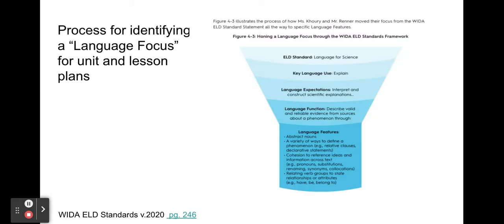Another excellent page to bookmark or refer to in the PDF is page 246. The standards framework can be looked at as a funnel that narrows down as the language gets more specific. We start at the top with the ELD standard — for example, language for science — then move into the key language use for that content area, which is 'explain,' then language expectations, the language function (what language you will use), and language features (different ways language can be used) to determine what students need to work on to understand their text.